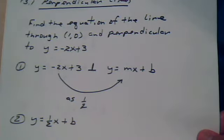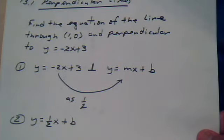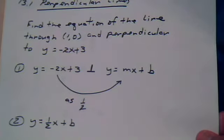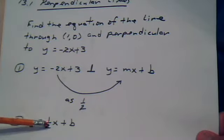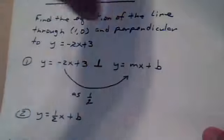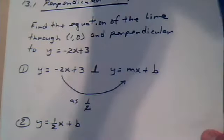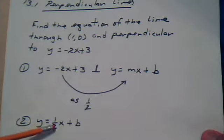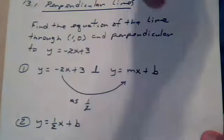We say that they're negative reciprocals of each other. That's the term that's used. You flip it around and change the sign. So now we know the 1 half should be the slope of the other line.